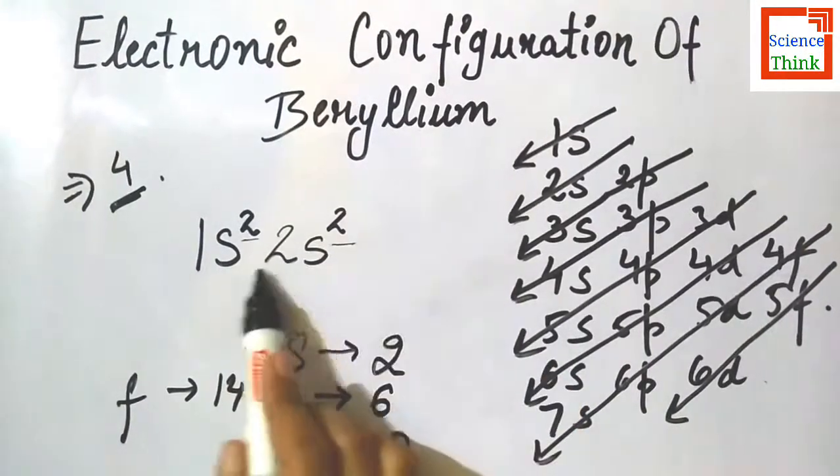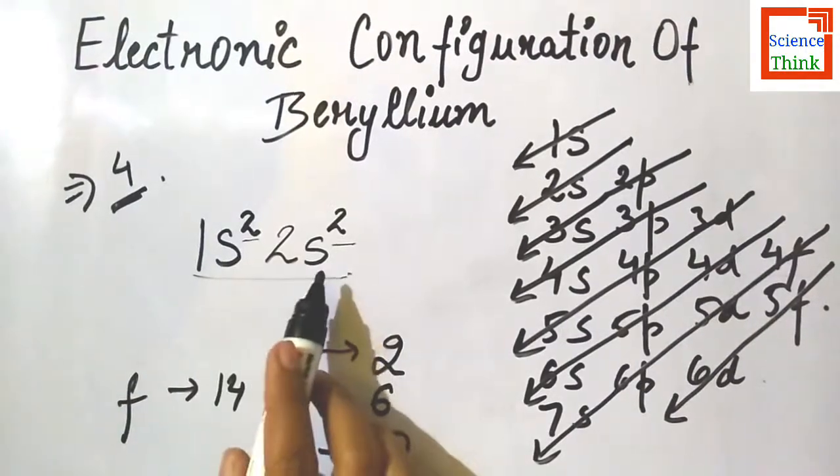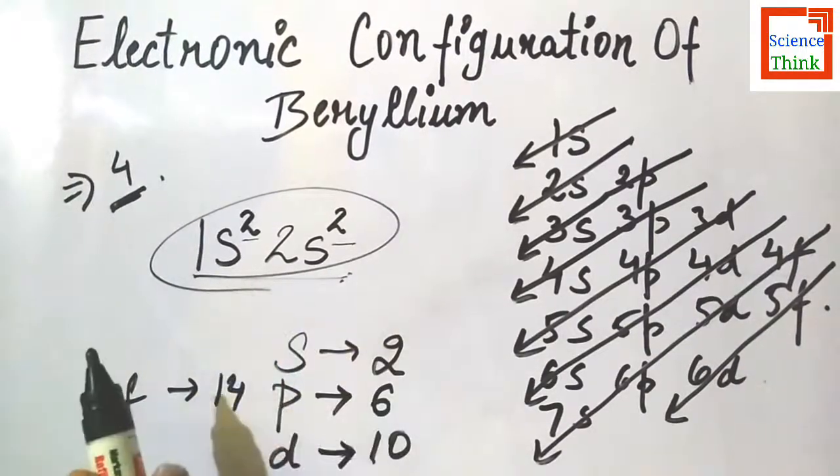So here we have two, here we have two - two plus two equals four. So beryllium has total number of four electrons and the electrons are in 1s and 2s. So the electronic configuration of beryllium will be 1s² 2s².